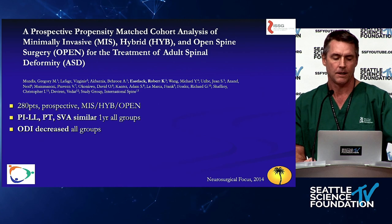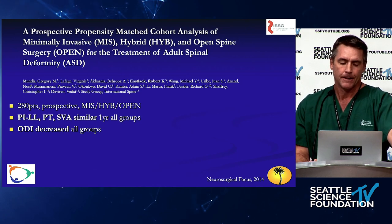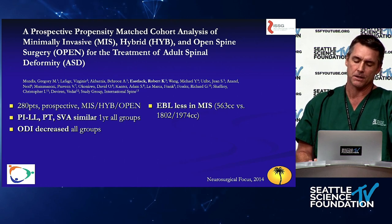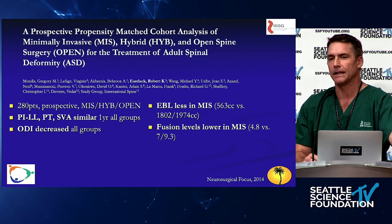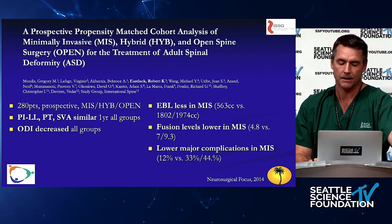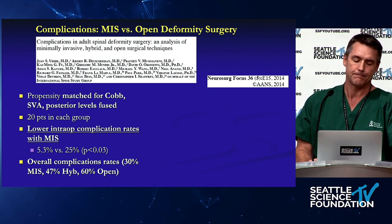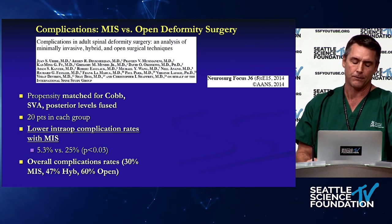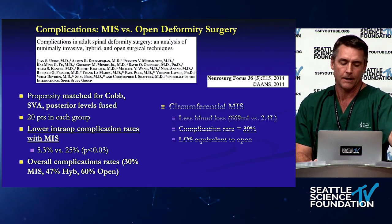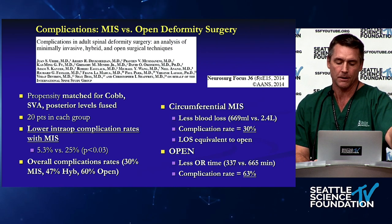When you look at comparative studies we've done on MIS versus open surgery, or what we call hybrid — a combination of those principles — with 280 propensity-matched patients, they all did fairly well in outcome measures, but there was considerably less EBL with MIS surgery. Interestingly, we could address deformities with fewer levels using MIS techniques in general, and with lower major complications. Circumferential MIS — essentially entirely MIS — revealed a fairly respectable outcome in all of those arenas.